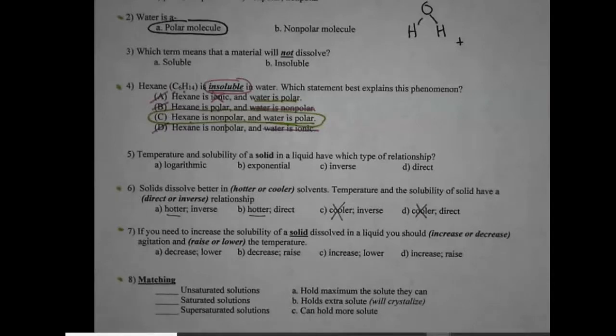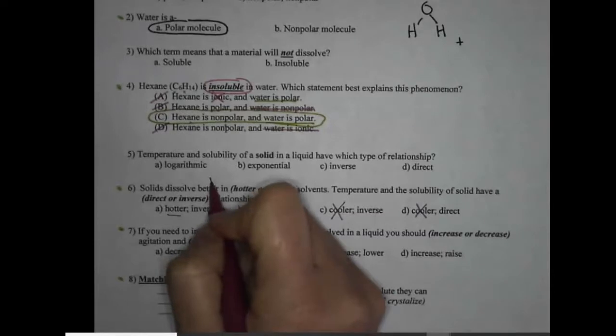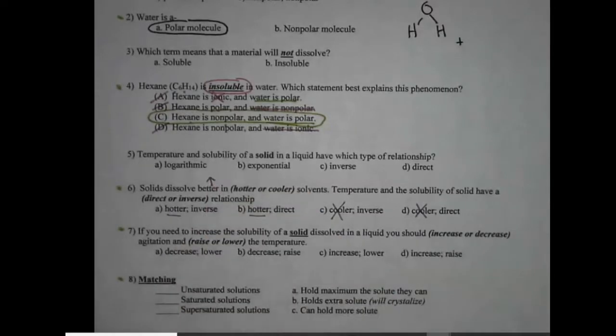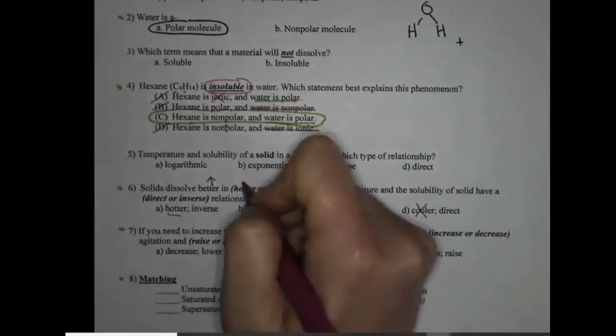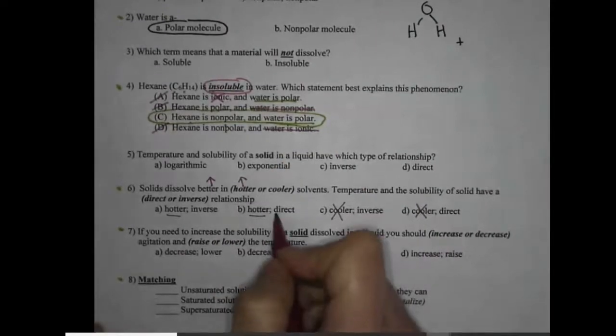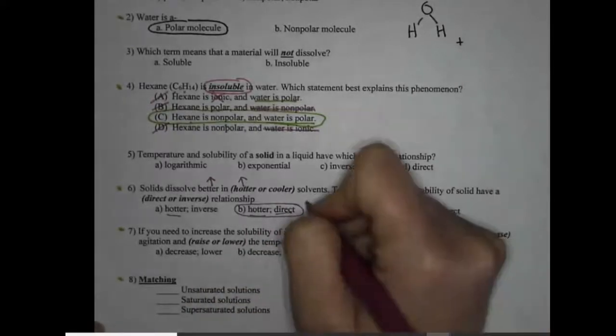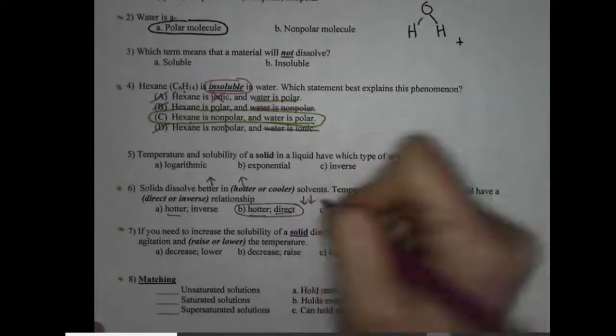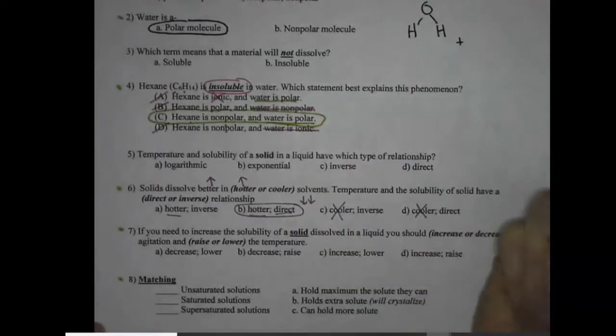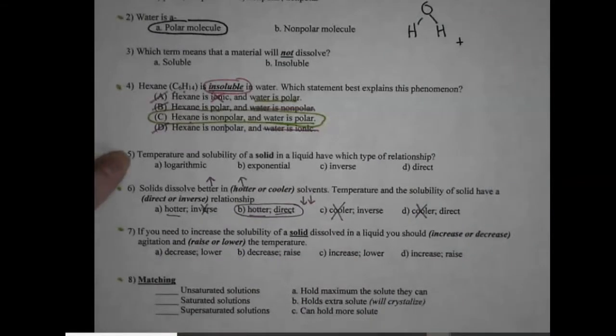We've got temperature and the solubility of solids have a blank relationship. Well, let's do our arrows. If they dissolve better, that's an increase in what kind of temperature? Higher temperature, hotter. If our arrows go up together, that's a direct relationship. They would also dissolve worse and colder. So again, we've got our direct relationship, not inverse. And that should help you with number five as well. It's the same type of question.